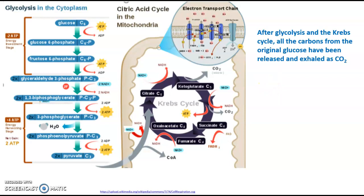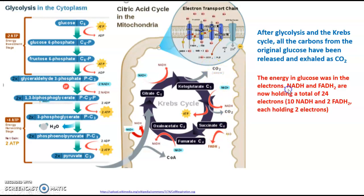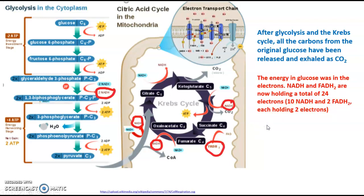After glycolysis and the Krebs cycle, all the carbons from the original glucose have been released and exhaled as carbon dioxide. The energy in glucose was in the electrons, and NADH and FADH2 are now holding on to a total of 24 electrons for each original glucose — that's 10 NADH and 2 FADH2, with each one holding on to two electrons. The majority of these electrons were picked up by NAD and FAD in the Krebs cycle.